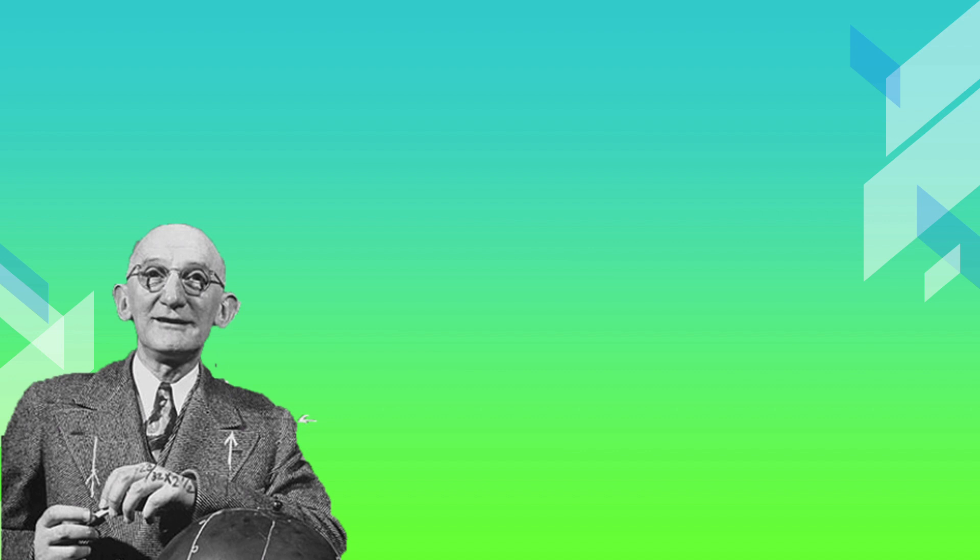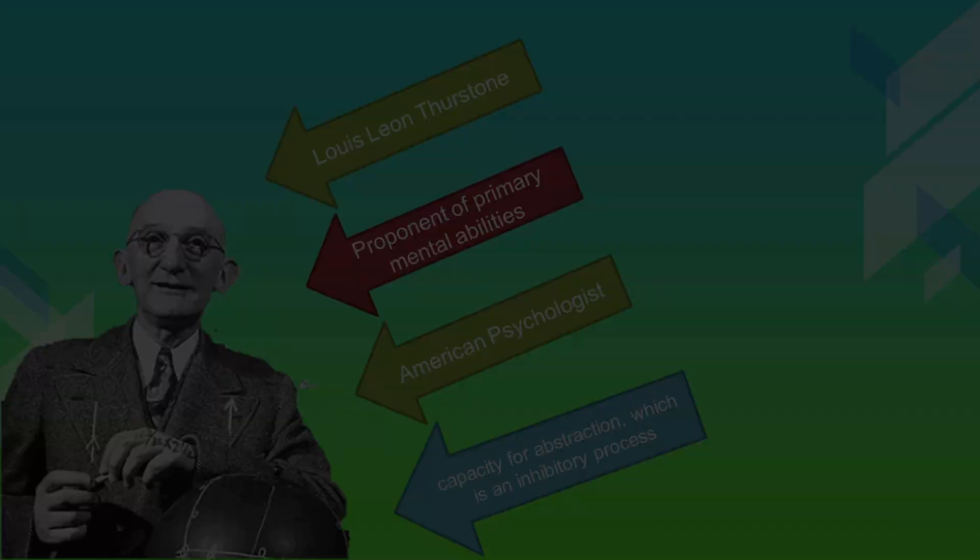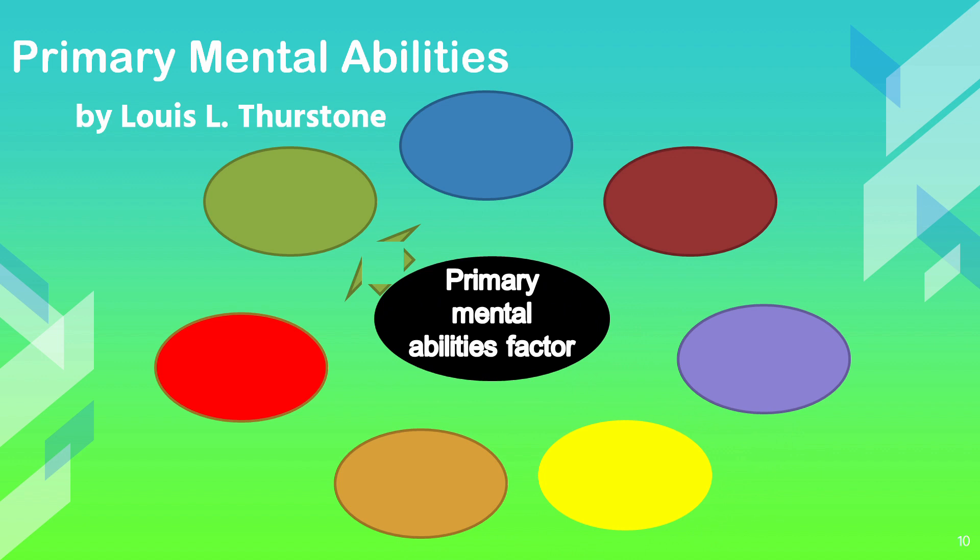This is Louis Leon Thurstone. According to him, intelligence, considered as a mental trait, is the capacity to make impulses focal at their early and final stage of formation. Intelligence is therefore the capacity for abstraction, which is an inhibitory process. Thurstone concluded that there was not a single factor of intelligence, but a set of primary mental abilities.